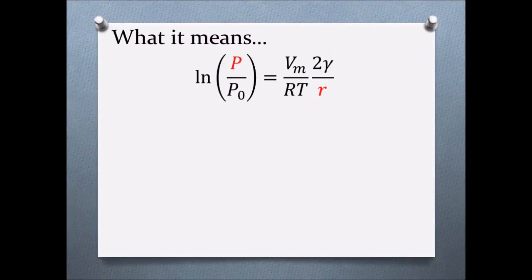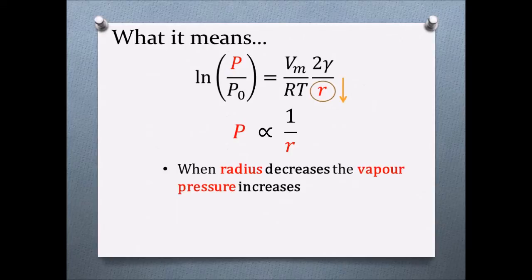If we consider the remaining terms in the equation as constant, then we can see that the vapor pressure of the curved surface is proportional to 1 over the radius. From this, we can see that when the radius decreases, the vapor pressure increases.